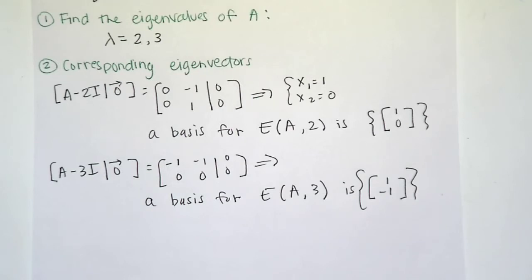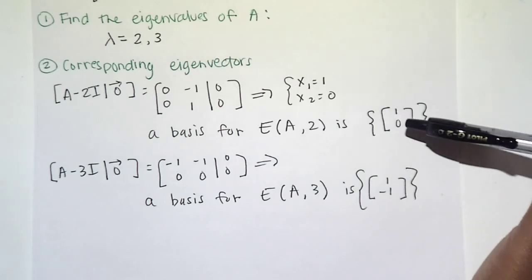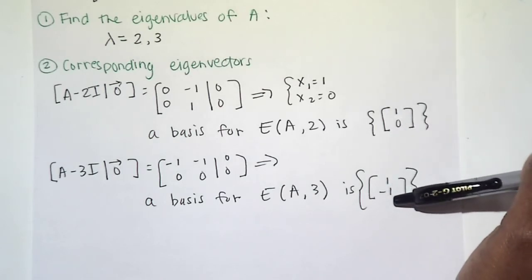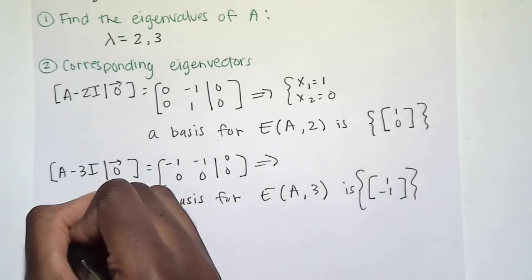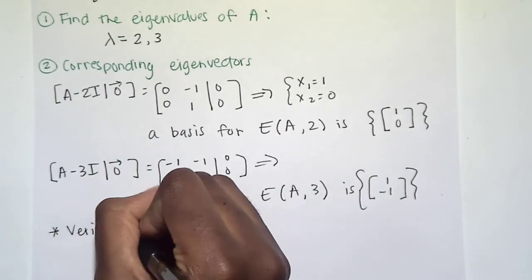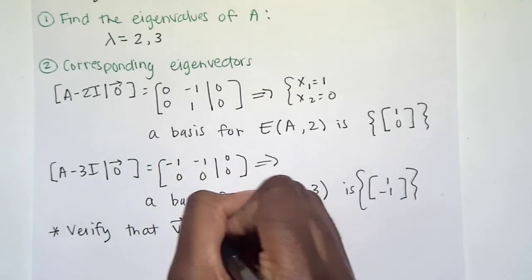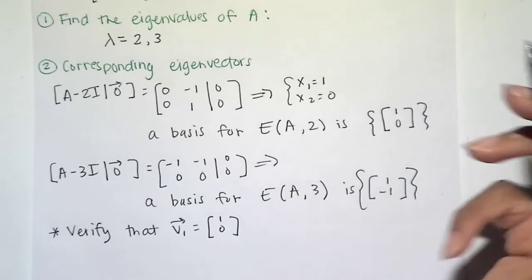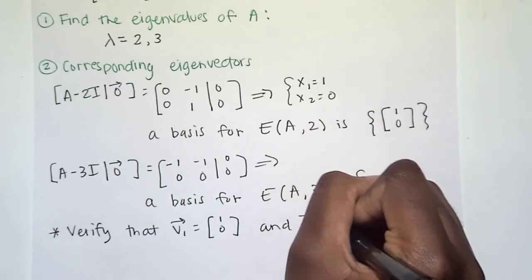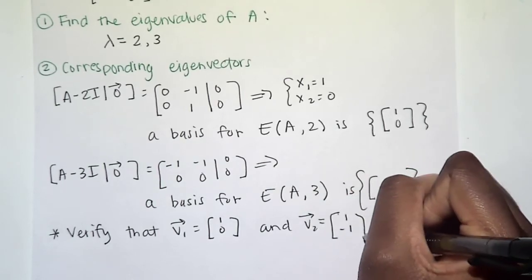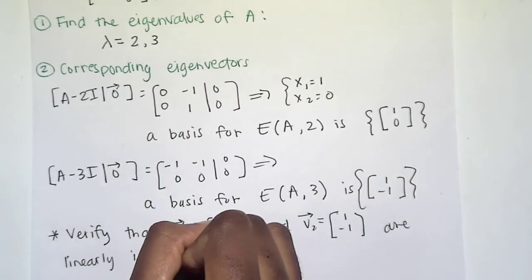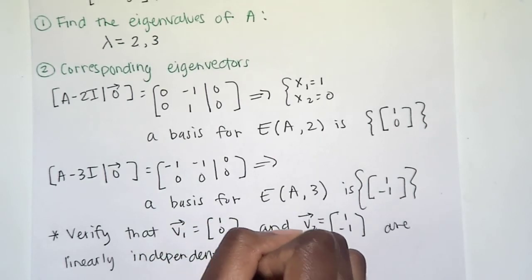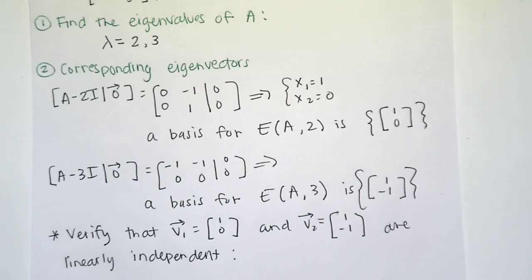So the next thing we need to do, we got two eigenvectors here, [1, 0] and [1, negative 1]. But our diagonalization theorem says they need to be linearly independent. So we need to verify that v1, I'm going to go with the first one and call it v1, and v2, our second eigenvector [1, negative 1], are linearly independent. What do we think? There's only two of them, so it's easy to check. They are linearly independent, which is great.